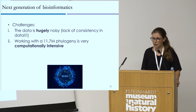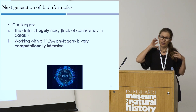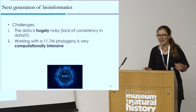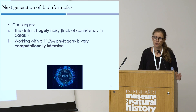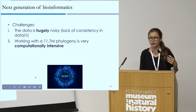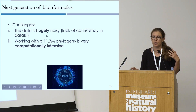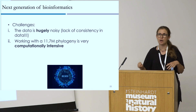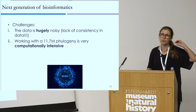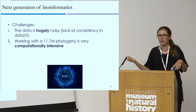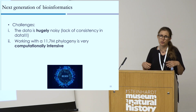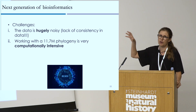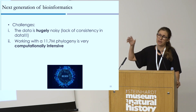The last part of my talk is about what I call the next generation of bioinformatics. One of the biggest challenges working with this data is that it's hugely noisy — there's a huge lack of consistency. Some labs upload sequences one way, some another. Even something as simple as the sex field has enormous variation: male, female, capital M, entries in Spanish, and so on. Working with an 11.7 million sequence phylogeny is also very computationally intensive.